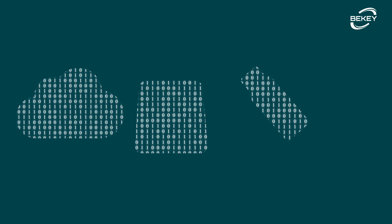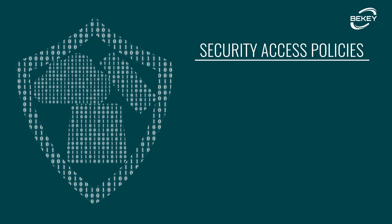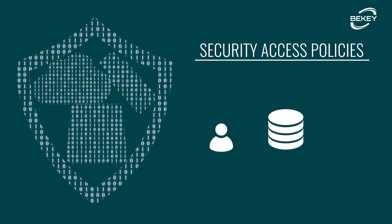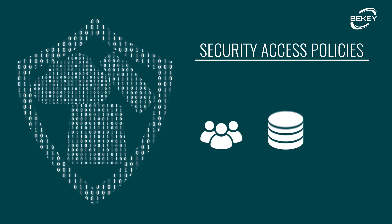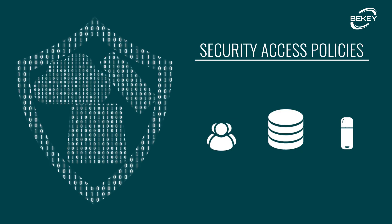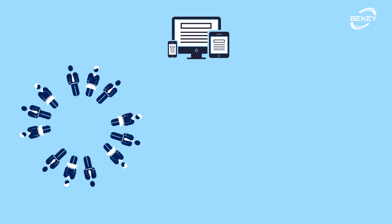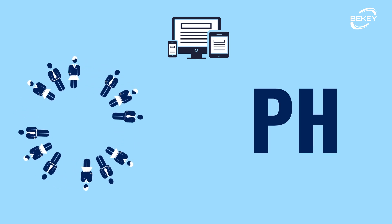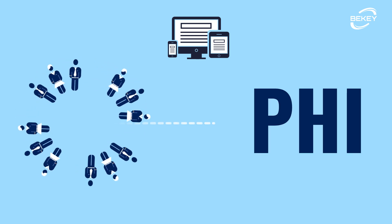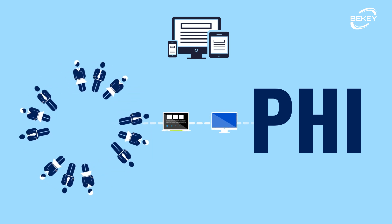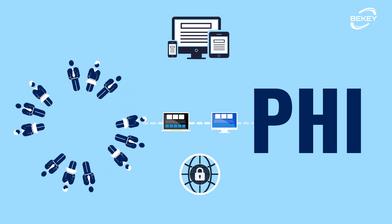To protect data in rest you have to employ security access policies — like who can access the data, what data can be accessed, and where it is safe to store. For web systems and applications, the best practice is to separate the user base and the PHI. The communication between these two must be kept within the local network without exposure to the web.